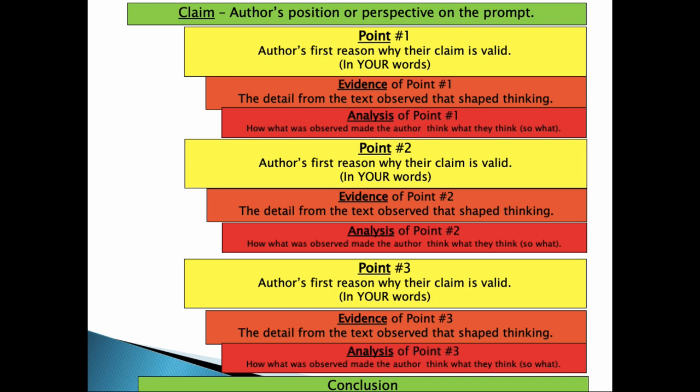And once we have made one PEA chunk, one point, one piece of evidence, one section of analysis, then we repeat that two more times. That then becomes a complete PEA paragraph. So if you want to count sentences, because for some reason that helps you at least have a base model, you can see that you're going to need at least a minimum of 11 sentences. One claim, point one, evidence analysis, point evidence analysis, point evidence analysis, and a conclusion.